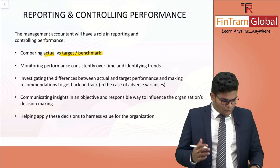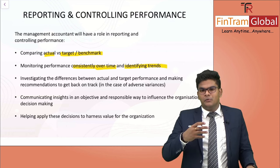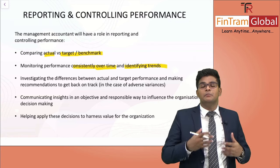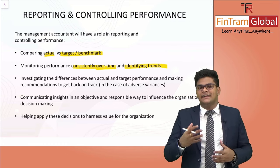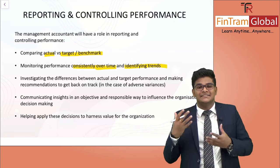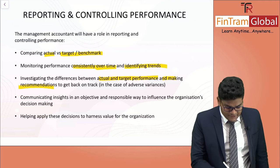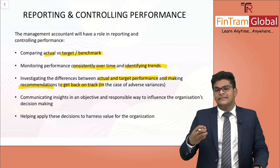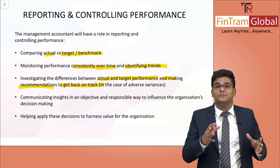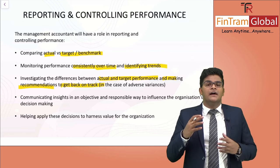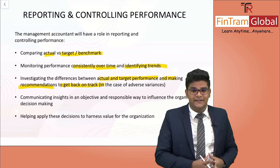Monitoring performance consistently over time and identifying trends is important — this is not a one-time process. We're going to continuously monitor performance, measure the KPIs again and again, identify patterns, and try to predict what's going to happen in the future and what corrective actions we can take. We also investigate the difference between actual and target performance and make recommendations to get back on track. If there are any adverse variances in these KPIs, the management accountants will take corrective action to mitigate these variances or try to convert them into favorable variances.